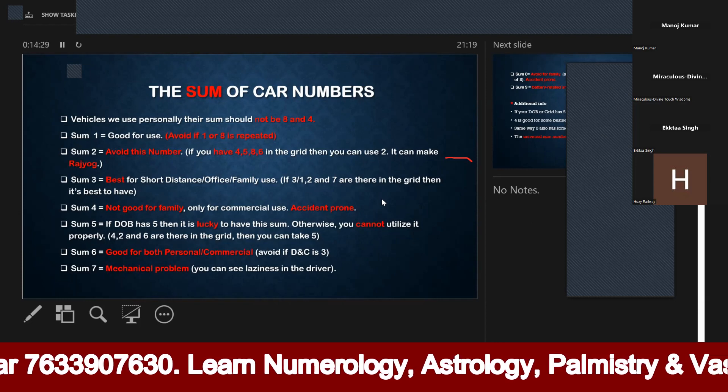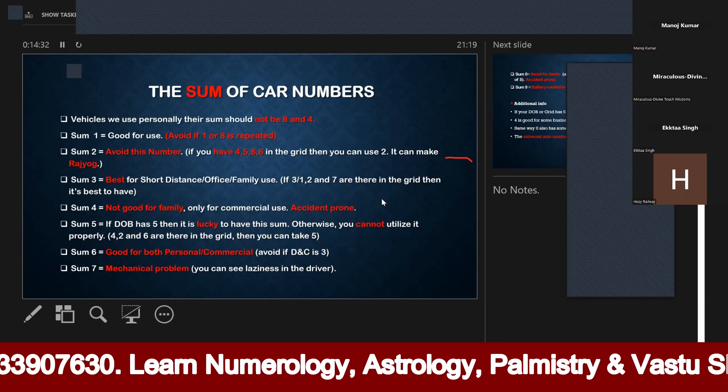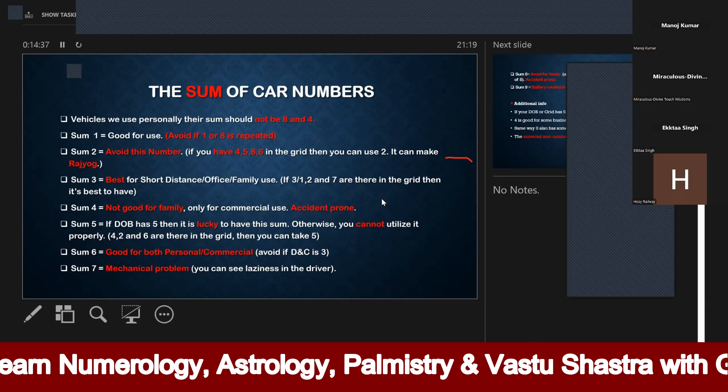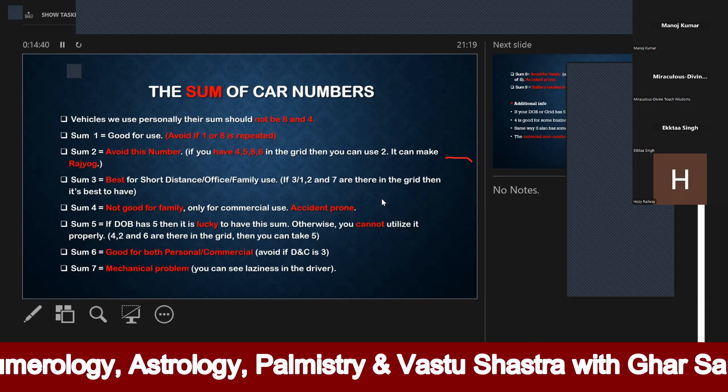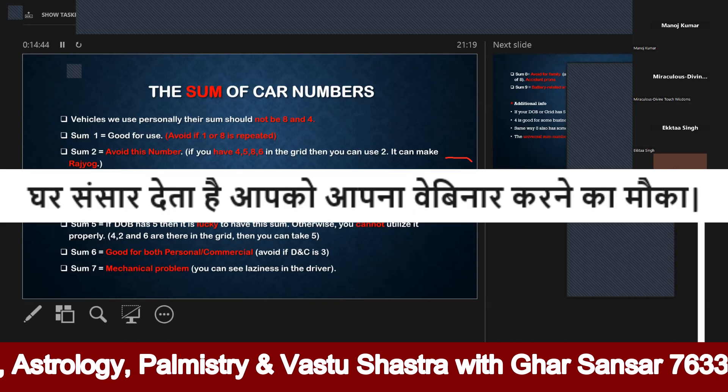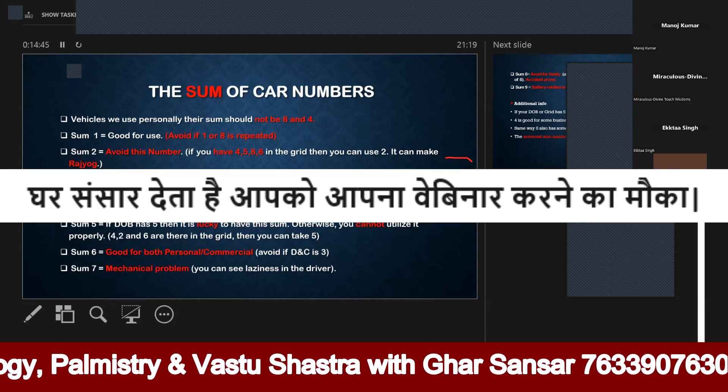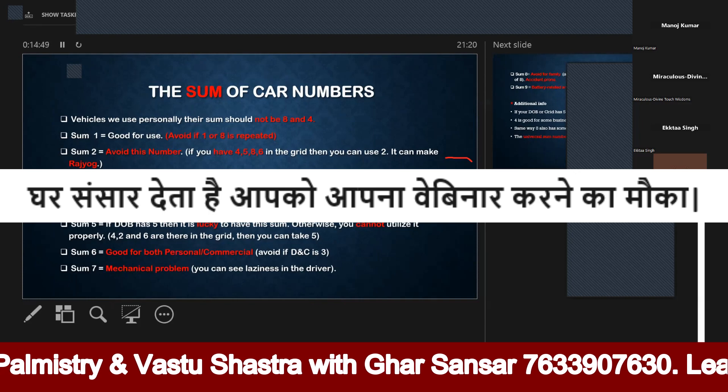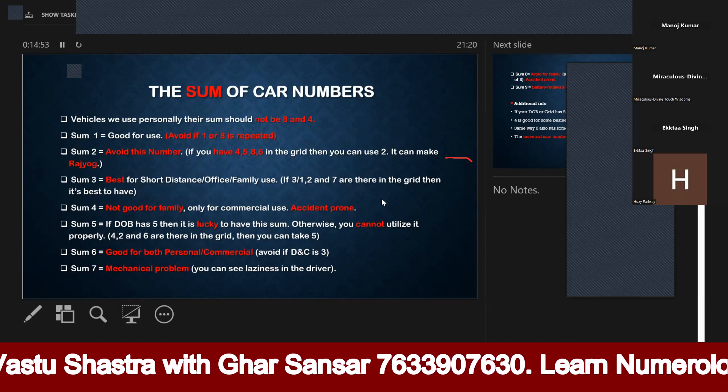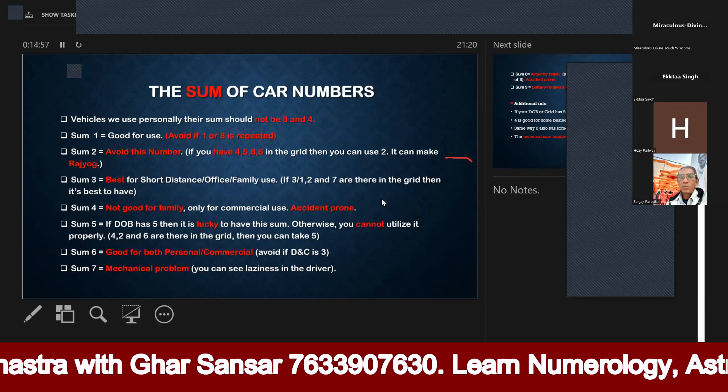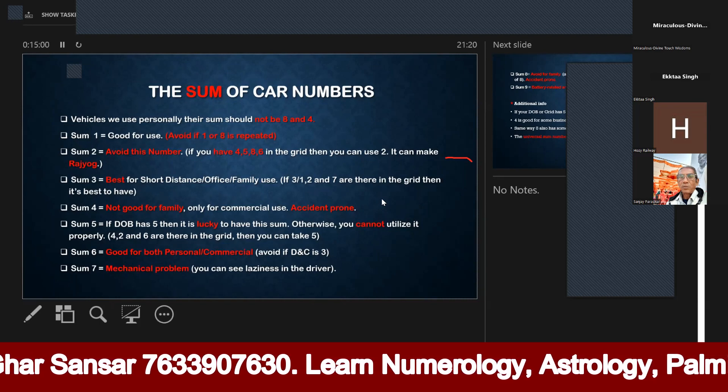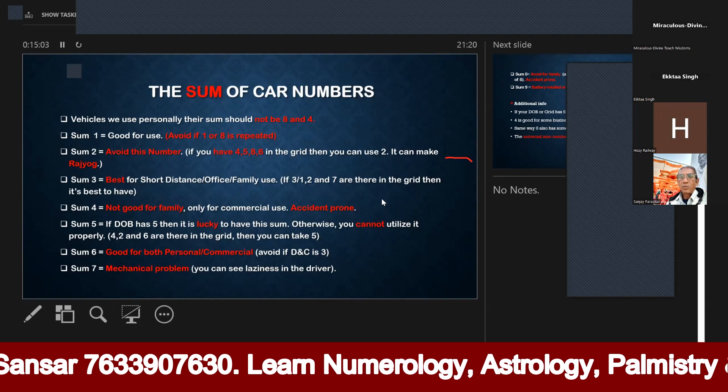Sum number 3 is very good for family use. You can do small work such as going to the office, home to office commute, and family use. If it is such a situation, then your sum number 3 is very good for it. But there is a condition that if you have a Lo Shu grid 2 or 7, then you will get better results for 3 in family use.